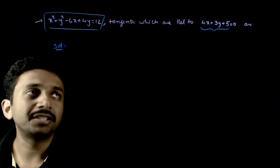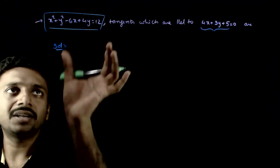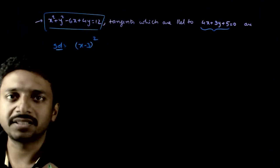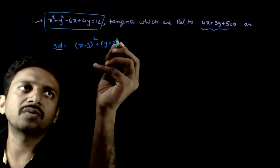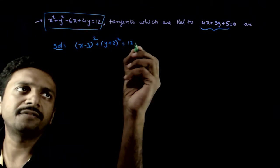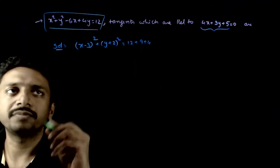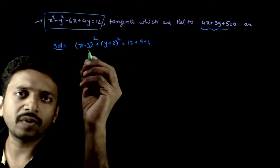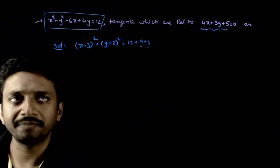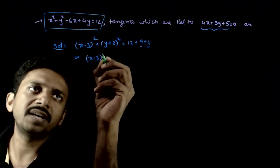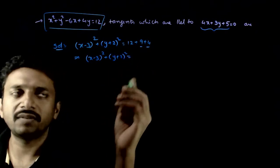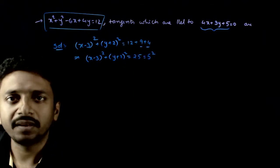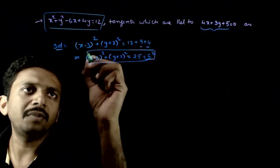So, how do we do this? Let us use the general equation of tangent to a general circle. This looks like x minus 3 whole square — x squared minus 6x is adjusted — plus y plus 2 whole square, which equals 12 plus 9 plus 4. So this implies x minus 3 whole square plus y plus 2 whole square is equal to 25, that is equal to 5 squared. This is the standard form of this circle.